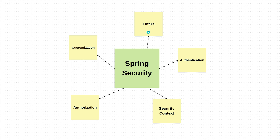Filters are like checkpoints at different doors in the building. When a request comes in, it goes through them. These filters handle tasks like authentication and authorization. For instance, there might be a filter that checks if you have a proper access card — authentication — and another one that ensures you can enter specific rooms — authorization. Spring Security uses authentication providers, which can be a database, LDAP, or any other source, to verify your identity.